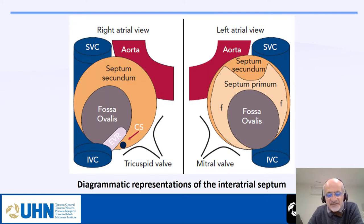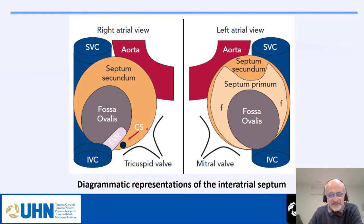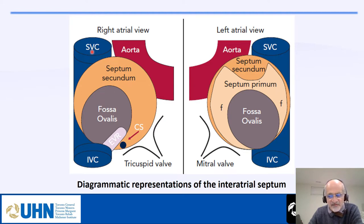This is the diagrammatic representation of the interatrial septum, a diagram we can use a lot during 3D acquisition. From the right side, you see mainly the septum secundum and fossa ovalis, the coronary sinus, the Eustachian valve, the SVC at the top, and the aorta at the top right. SVC is at about 11 o'clock — we use this as a landmark when displaying the 3D from the right side.